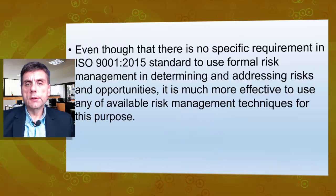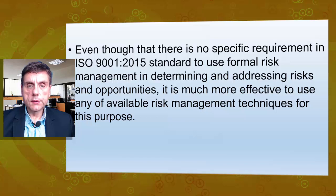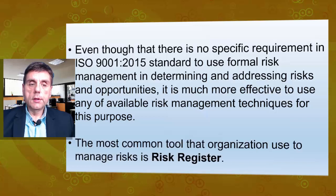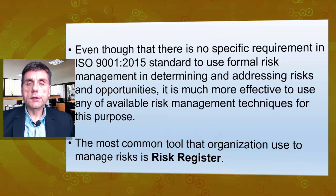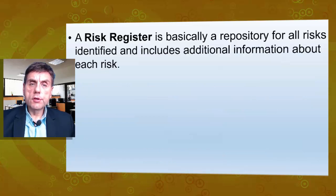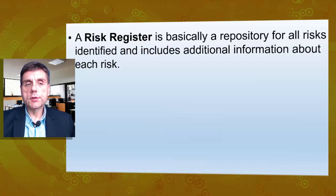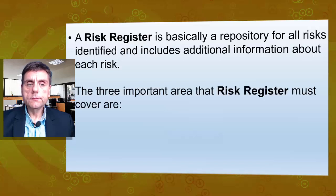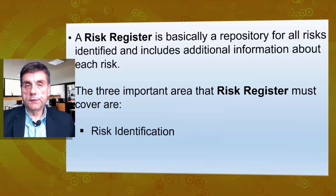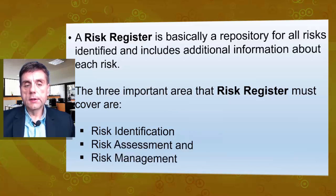Even though there is no specific requirement in ISO 9001:2015 standard to use formal risk management in determining and addressing risks and opportunities, it is much more effective to use any of the available risk management techniques for this purpose. The most common tool that organizations use to manage risk is a risk register. A risk register is basically a repository for all risks identified and includes additional information about each individual risk. The three important areas that a risk register must cover are risk identification, risk assessment, and risk management.